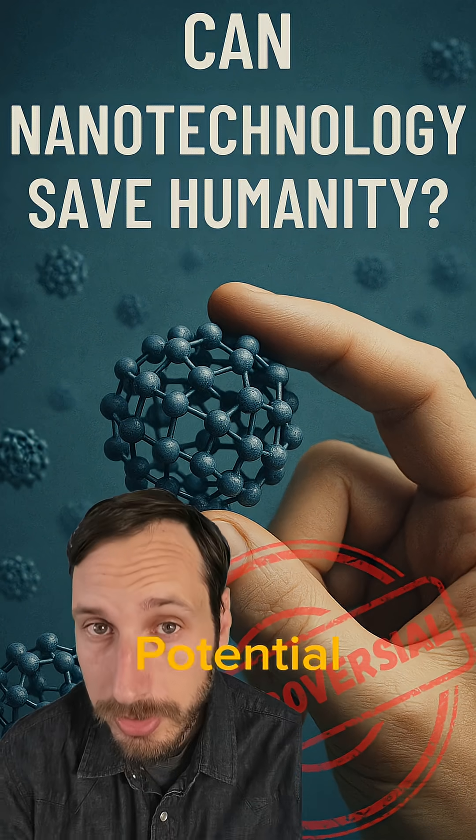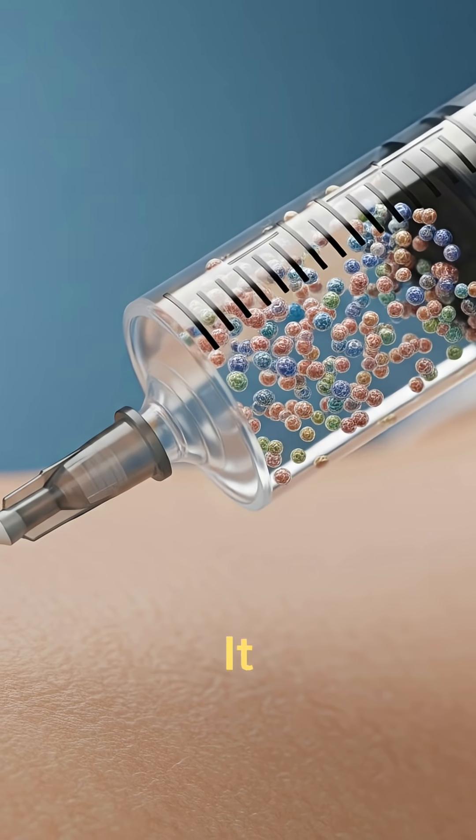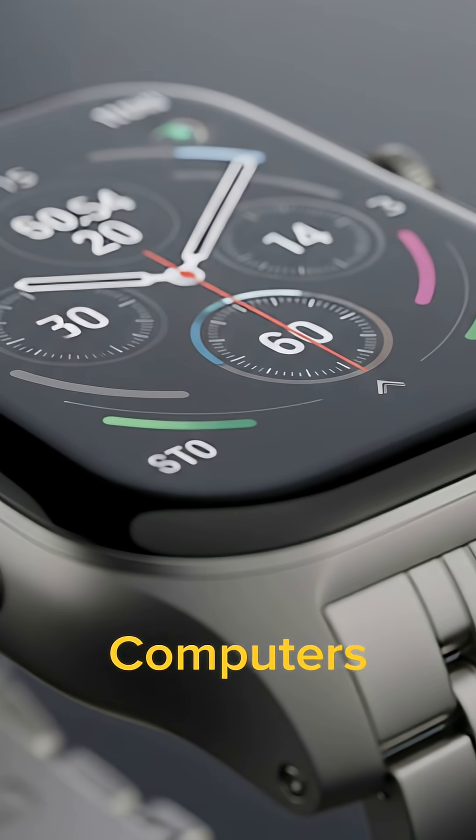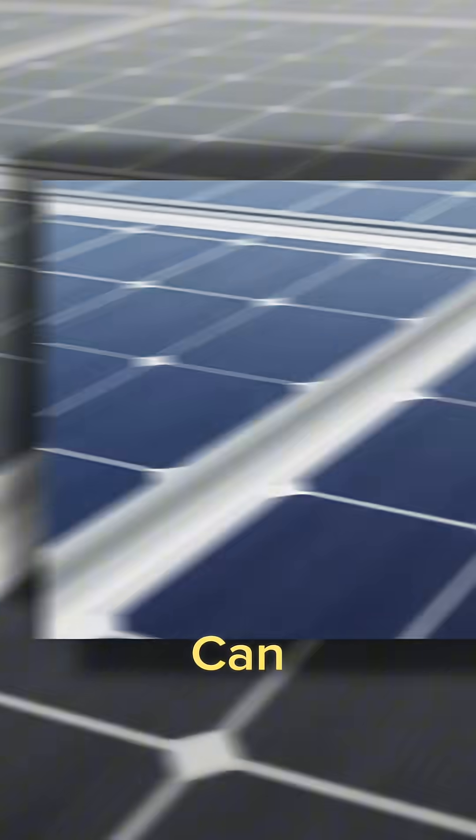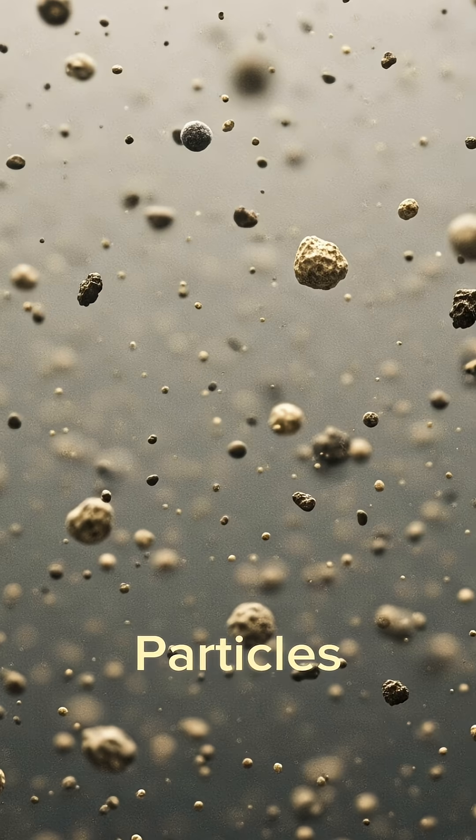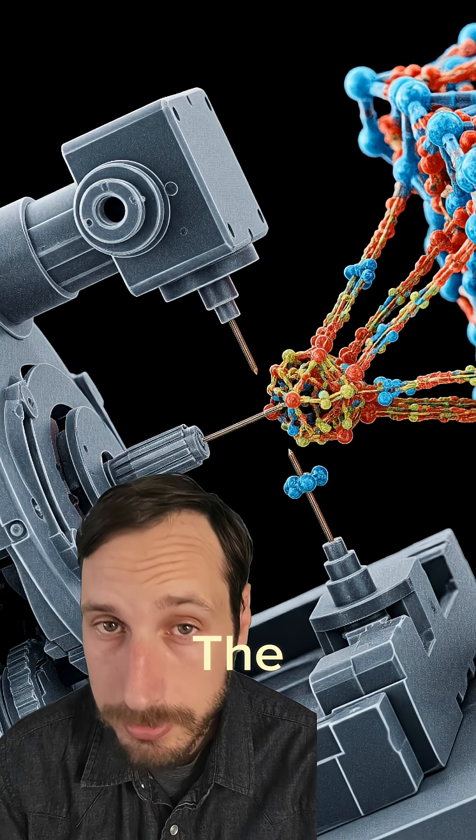Nanotechnology has the potential to solve most of our problems but it also carries significant risks. It can help us with more precise drug delivery as well as making our computers smaller but more capable, while it can also improve our renewable energy technology and even detect polluting particles and help break them down. So how exactly does it work and what are the risks?